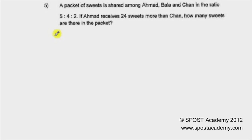A packet of sweets is shared among Ahmad, Bala, and Chan in the ratio of 5 is to 4 is to 2. If Ahmad receives 24 sweets more than Chan, how many sweets are there in one packet?